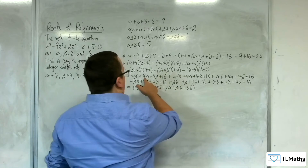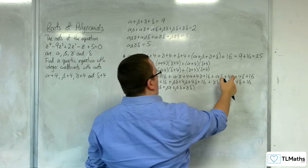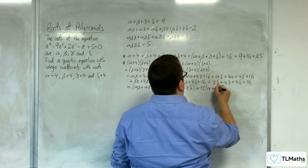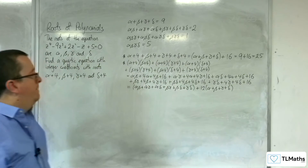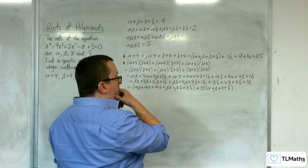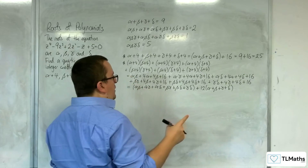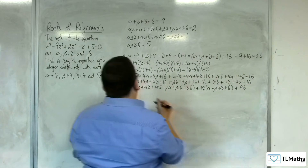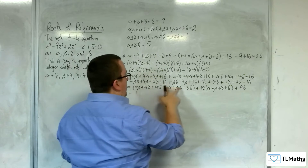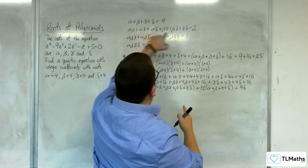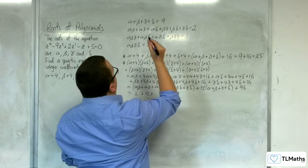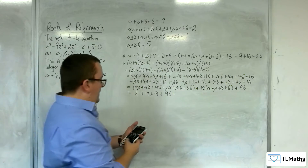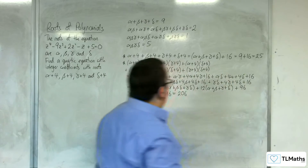We've got six pair terms. Then we've got 4·alpha appearing three times — so we've got three lots of each, meaning 12 lots of (alpha + beta + gamma + delta). And then we've got the 16s appearing six times, so six lots of 16 is 96. So that whole expression gives us 2 + 12·(9) + 96 = 206. That's the second one done.